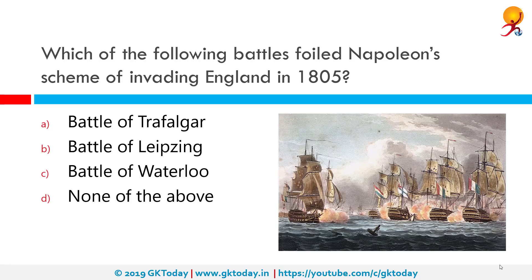Which of the following battles foiled Napoleon's scheme of invading England in 1805? The correct answer is the Battle of Trafalgar. The Battle of Trafalgar was a naval engagement fought by the British Royal Navy against the combined fleets of the French and Spanish navies during the War of the Third Coalition of the Napoleonic Wars.